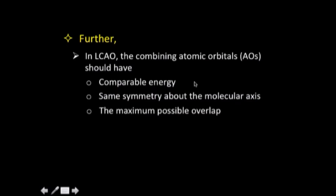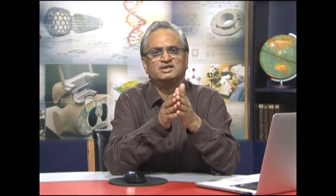When we talk about LCAO — combining atomic orbitals to get molecular orbitals — we have to keep three things in mind. First, the atomic orbitals which are combining must have comparable energy; you cannot combine an orbital of very low energy with one of very high energy, the two will not interact. Second, the combining atomic orbitals must have the same symmetry about the molecular axis — they can be aligned along the internuclear axis or overlap laterally, giving sigma bonds or pi bonds. Third, the overlap should be as effective as possible, because more overlap gives a better molecular orbital.